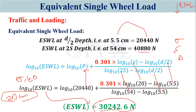In flexible pavement design, instead of considering multiple wheels, we consider a single equivalent wheel load that causes the same stress, strain, and deflection. This relationship is suggested by Boyd and Foster. This is an important topic from the numerical example point of view and for flexible pavement design in general, especially when using IIT PAV software. In the next lecture, we will discuss the design of flexible pavement as per IRC 37 for 2001, 2012, and 2018.